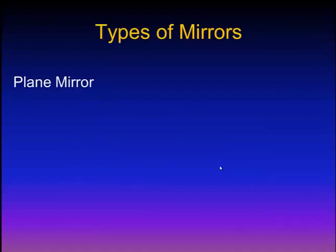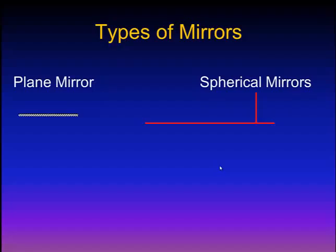Types of mirrors: we have two types of mirrors — plane mirrors and spherical mirrors. Concerning spherical mirrors, we have two types: the first type is concave mirror, and the second type is convex mirror.